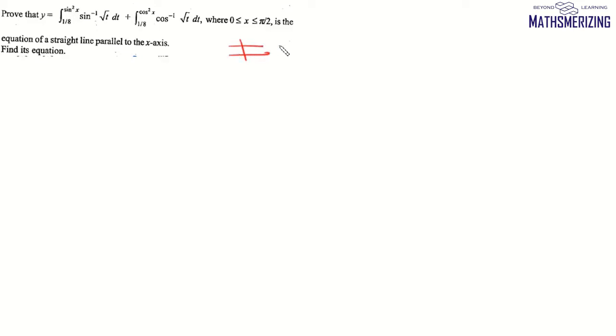Now here are the questions. We need to prove that y equals this function is the equation of a straight line parallel to the x-axis. We know that for any line which is parallel to the x-axis, y is constant. In order to prove that it is a straight line parallel to the x-axis, we know that the equation is y equals c, or the derivative of y with respect to x is simply 0.